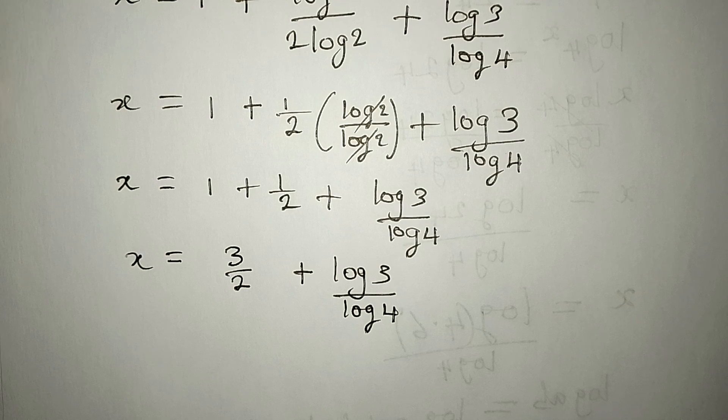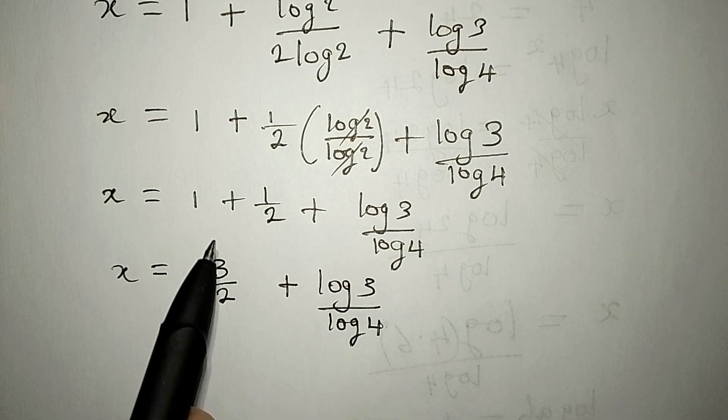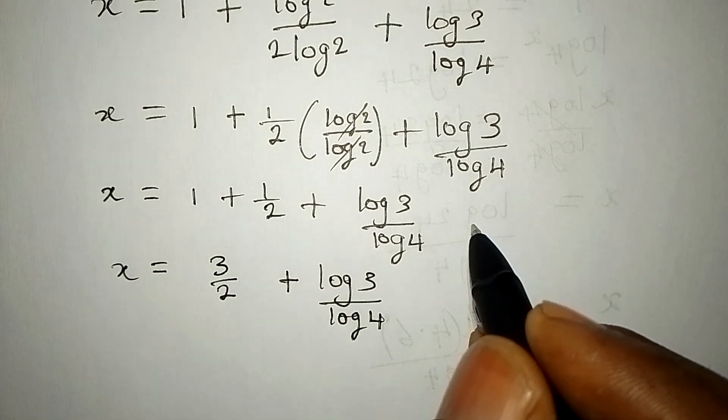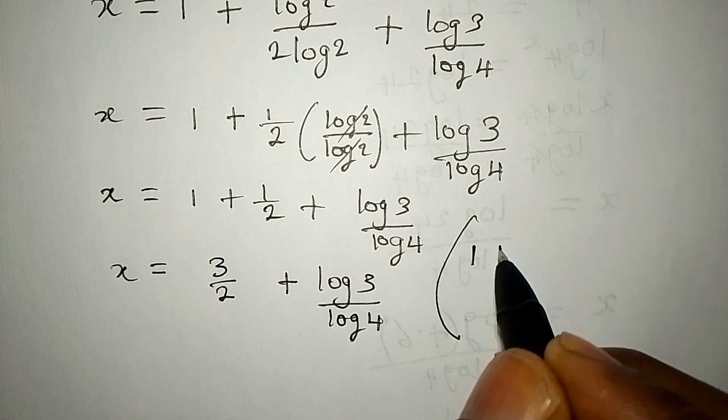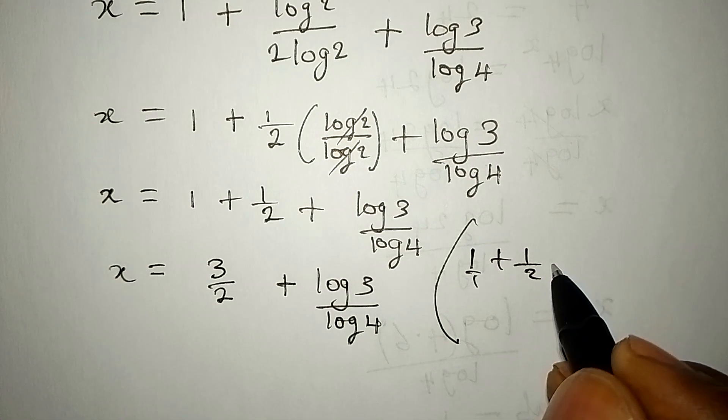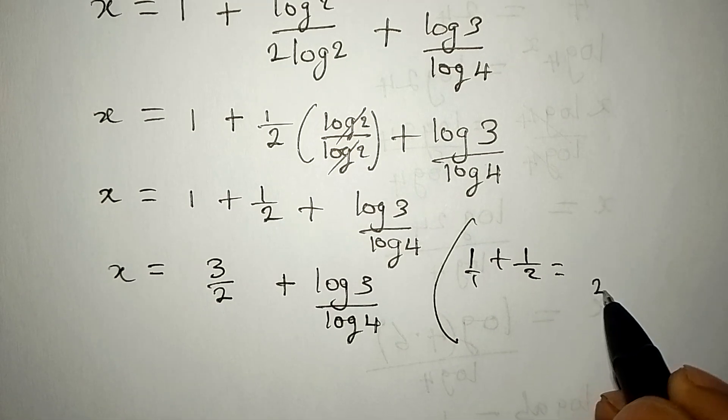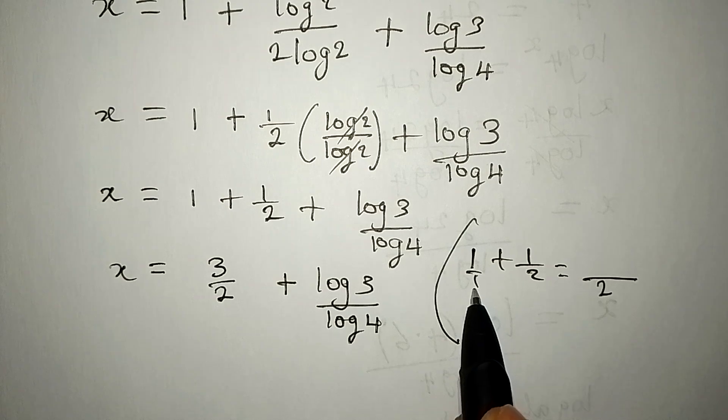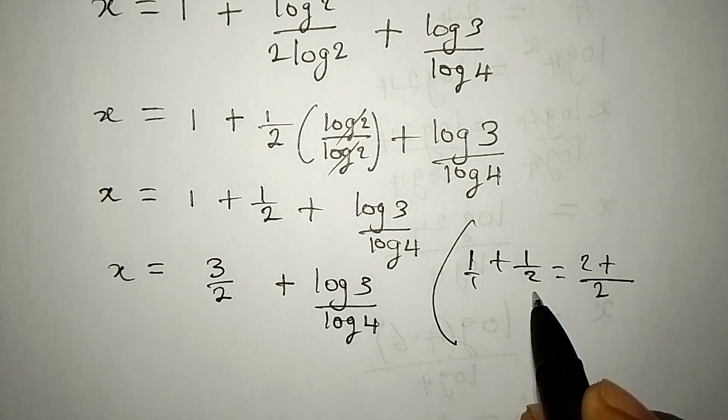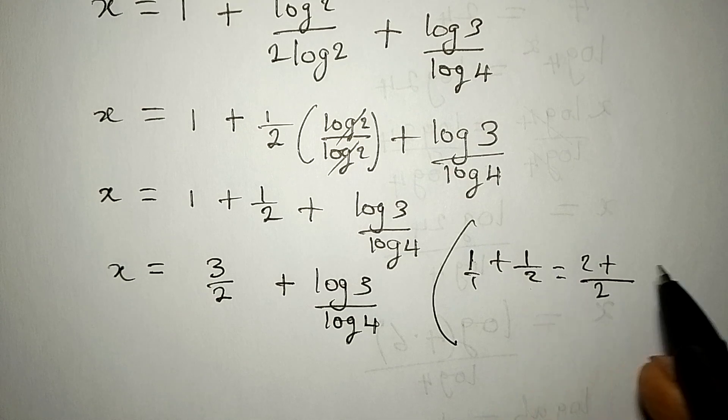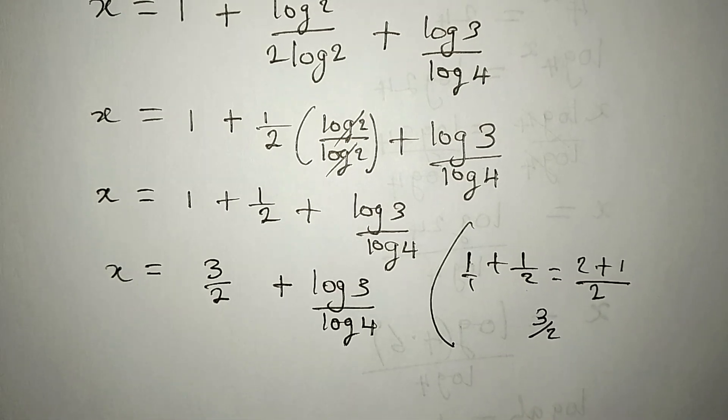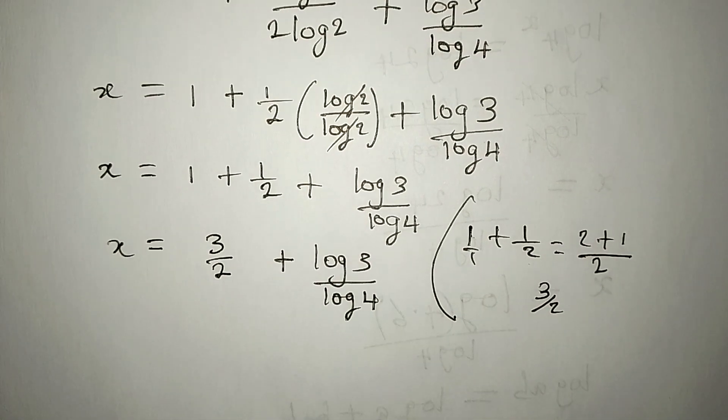By the way, some persons will be asking, how did we get 3 over 2 as 1 plus 1 over 2? Now, let me do that here. 1 plus 1 over 2. This is over 1 as well. So, to find the LCM, you're going to have 2. Then, 2 divided by 1 is 2 times 1. We have 2. Plus, 2 divided by 2 is 1 times 1. We have 1. So, we have 3 over 2. If you put this together.